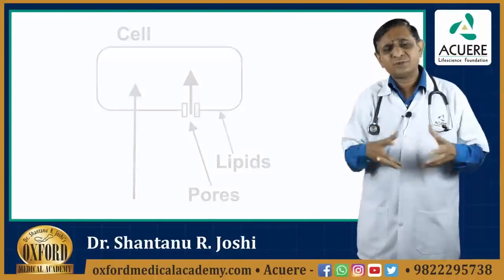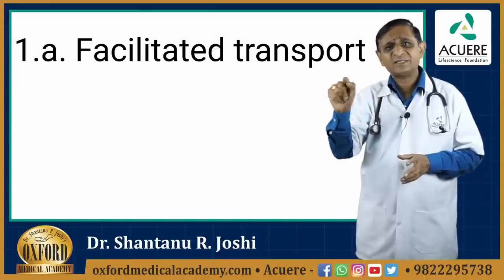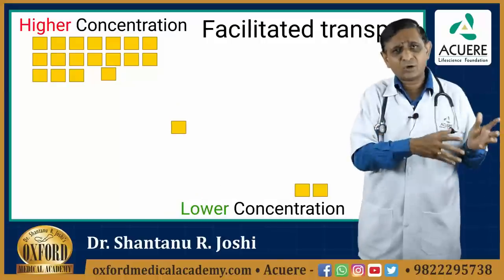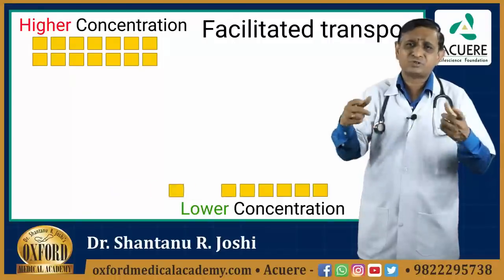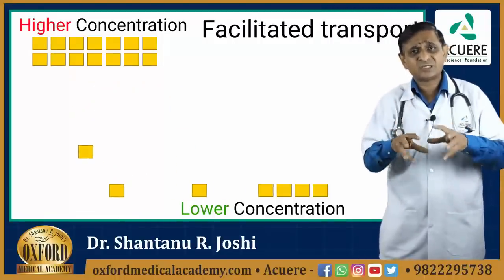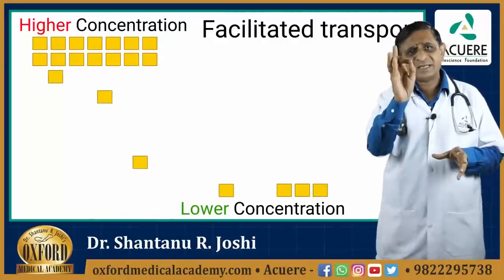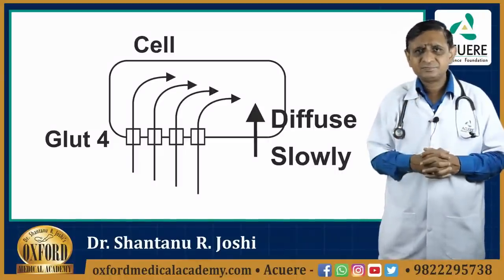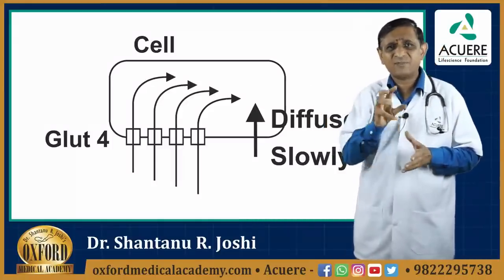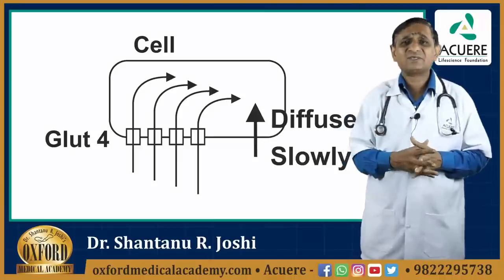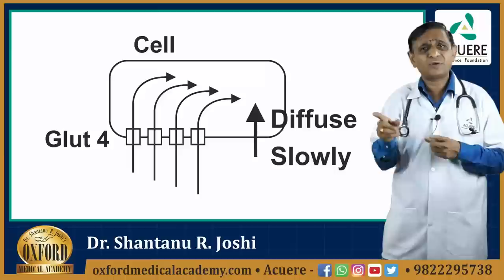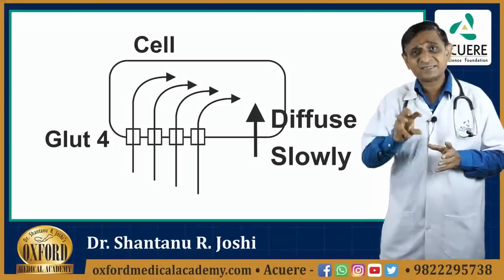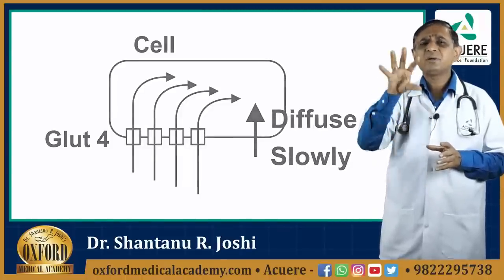One another form of passive transport is known as facilitated transport. This is again passive transport. It again takes place from higher concentration to lower concentration, that is in the direction of the concentration gradient. But it is applicable for the substances which are naturally less diffusible. We will take the example of sugar, that is glucose. Glucose by its own diffuses less. But with the help of GLUT4 receptors, the entry of the sugar inside the cell is facilitated. GLUT4 receptors get recruited to the cell surface with the help of insulin. This is facilitated transport and it is also part of passive transport.